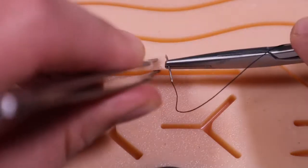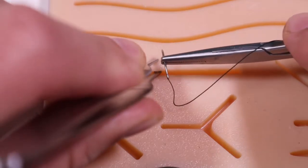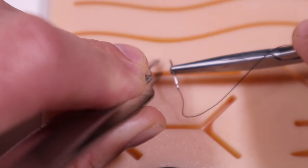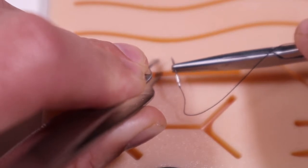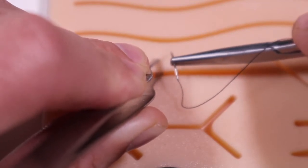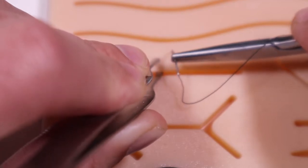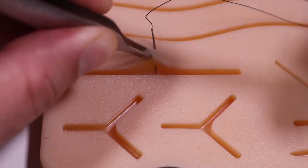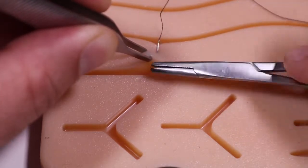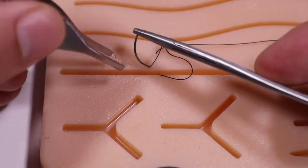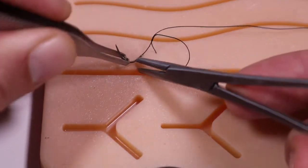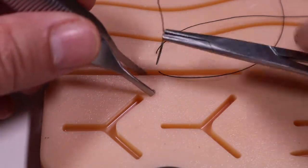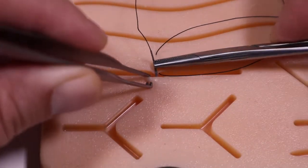Just as we do in the interrupted suture technique, we're going to start in the middle. Now with the simple interrupted, we start about five millimeters from the wound edge. We're going to roughly double that. We're going to come out the wound edge.